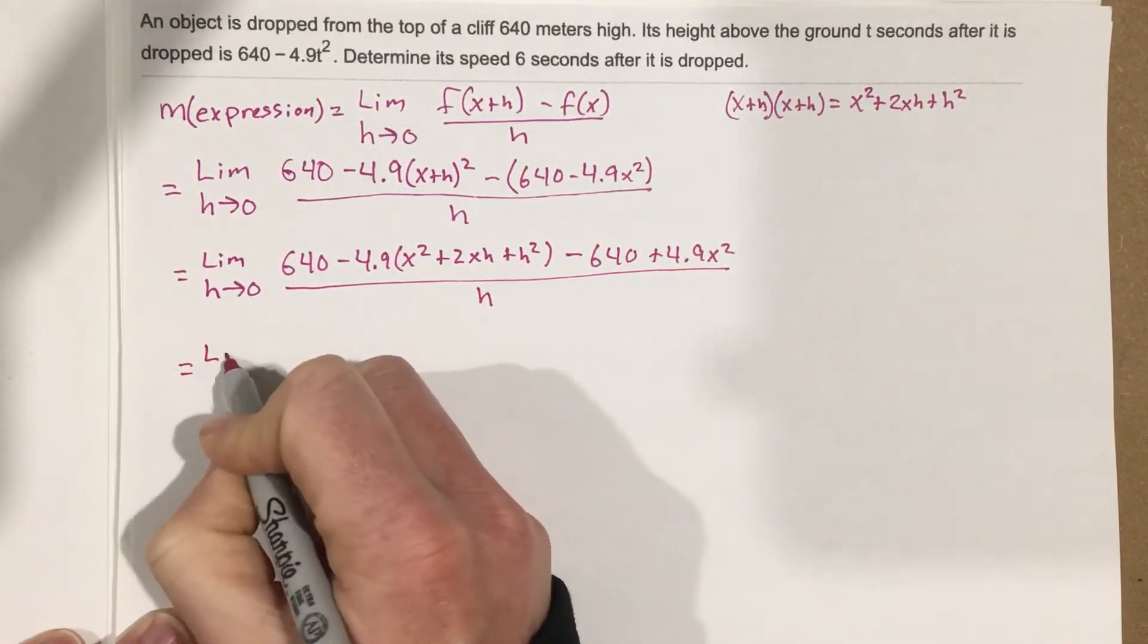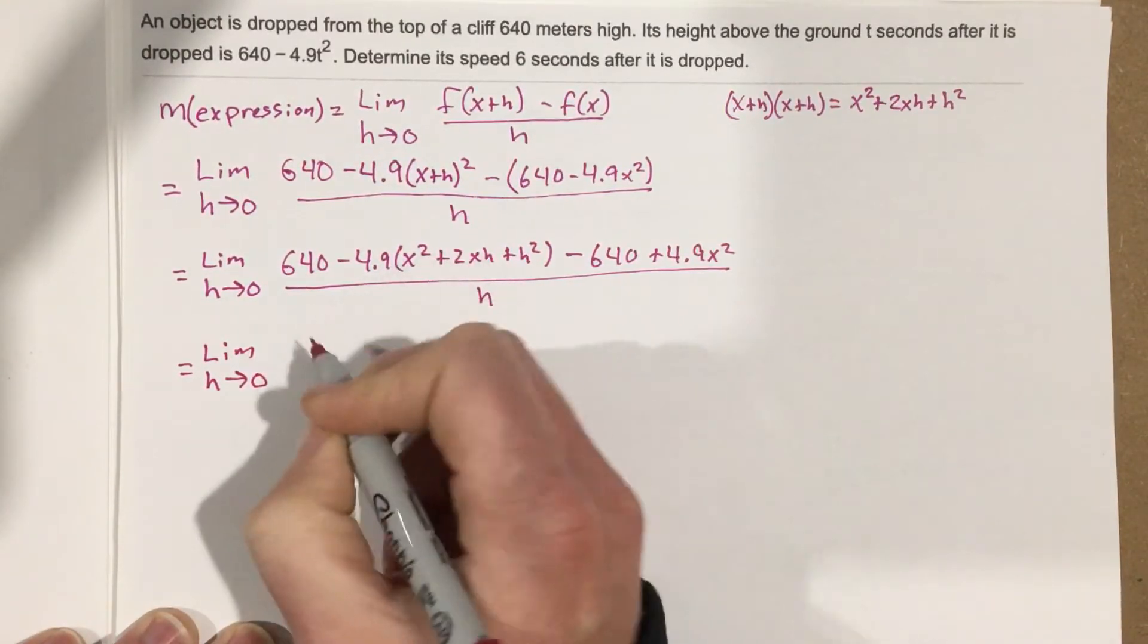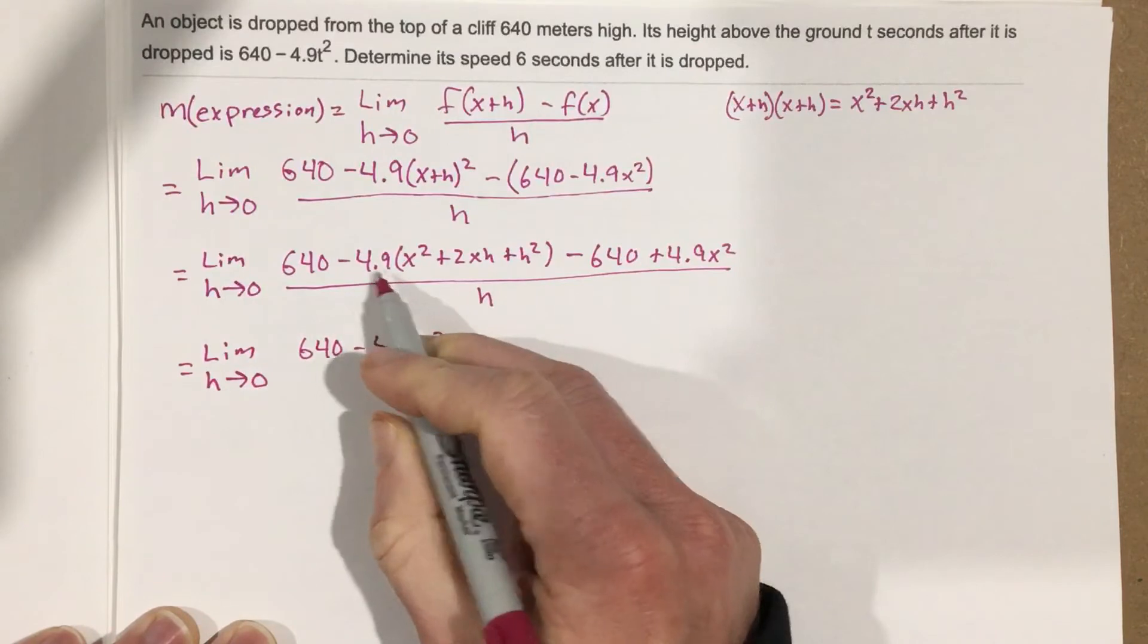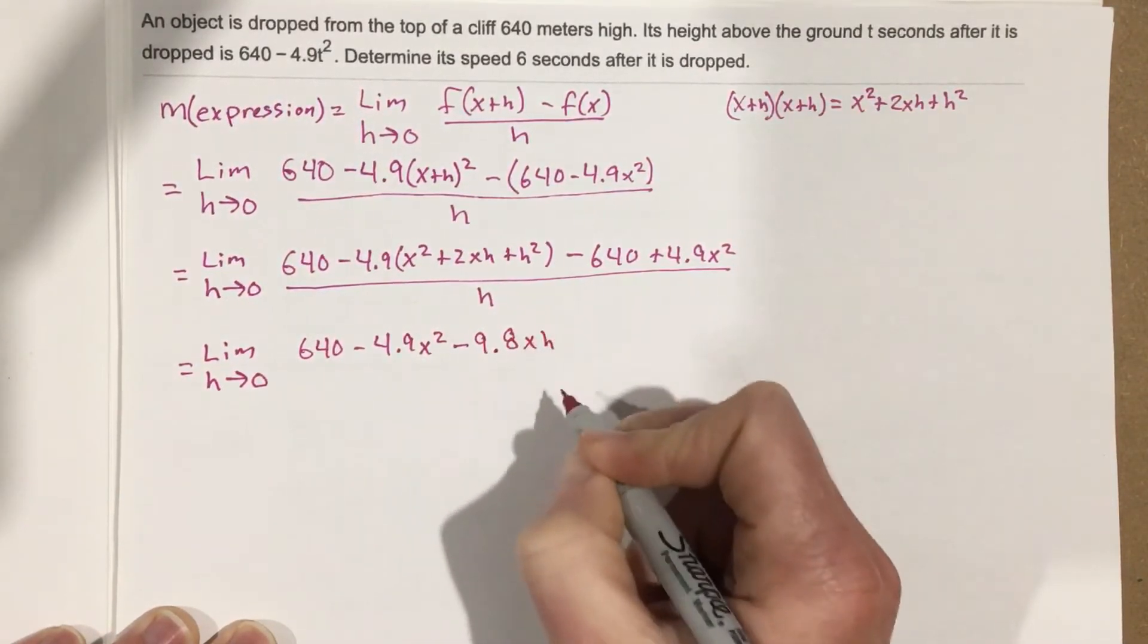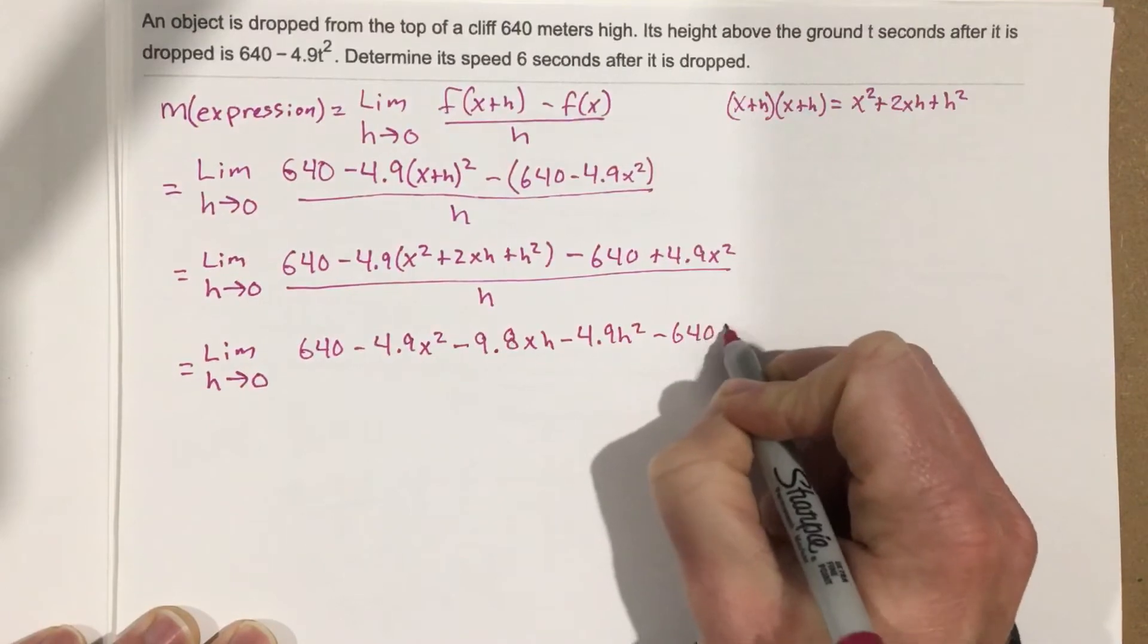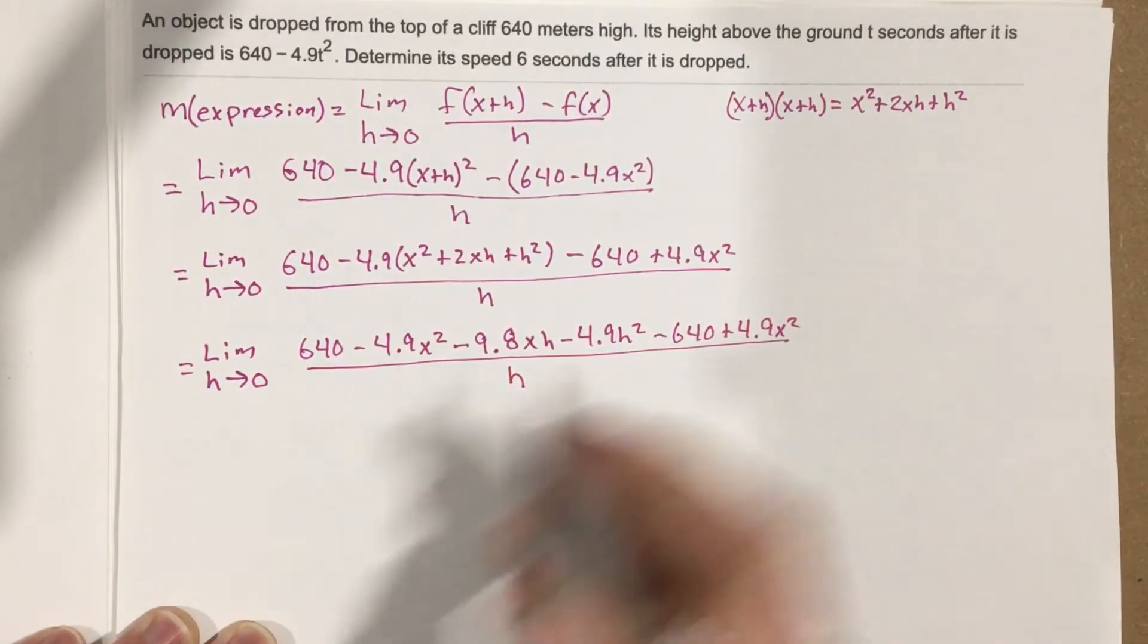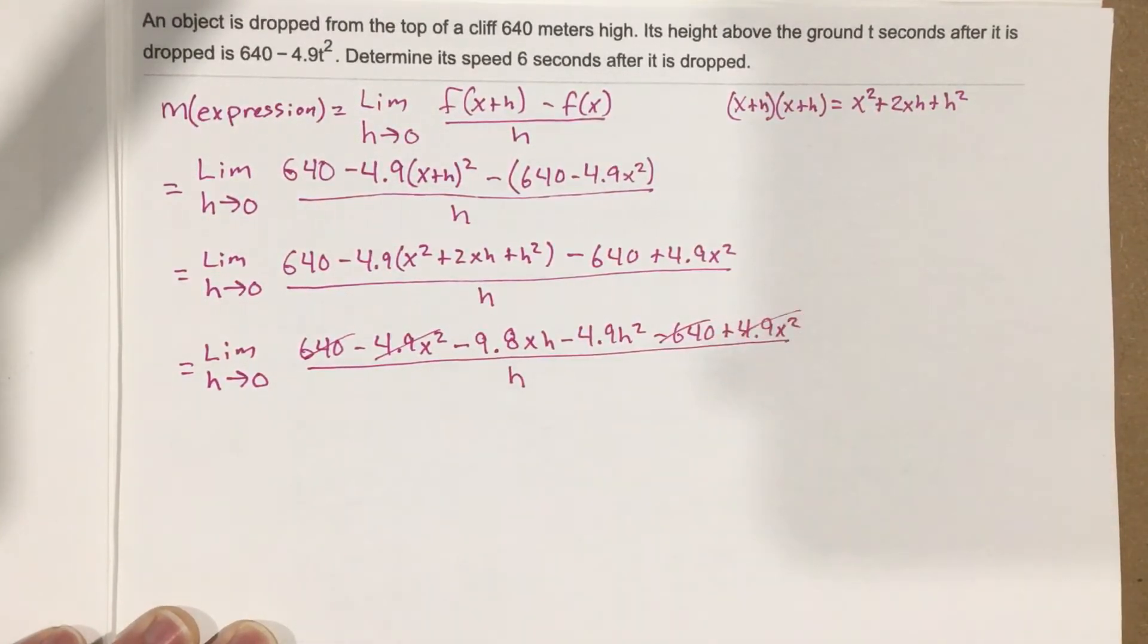Let's now do the limit as h approaches zero. Distribute the negative 4.9, so we end up with 640 minus 4.9x squared minus 9.8xh minus 4.9h squared minus 640 plus 4.9x squared, all over h. Negative 640 and 640 cancel. We get negative 4.9x squared and 4.9x squared canceling.